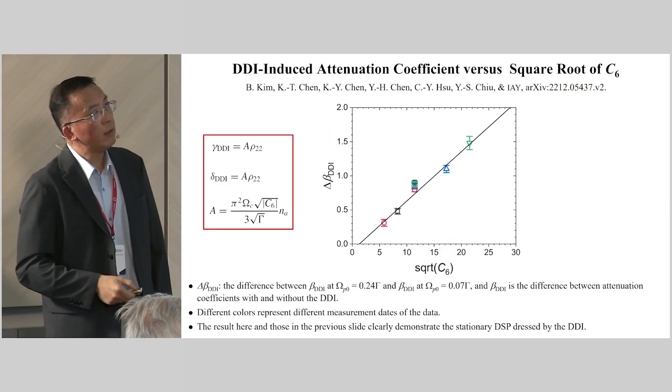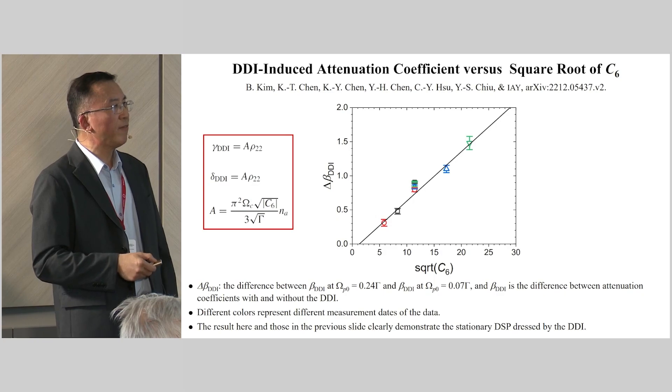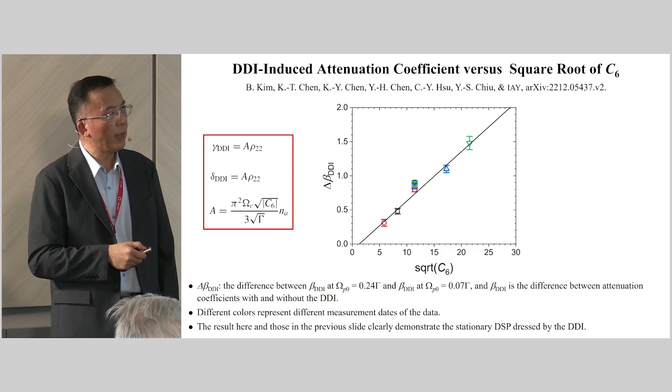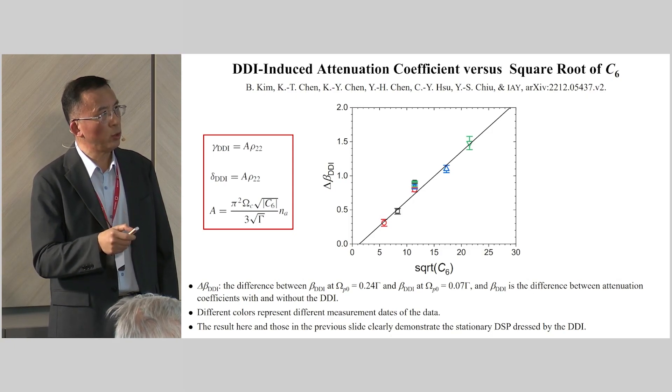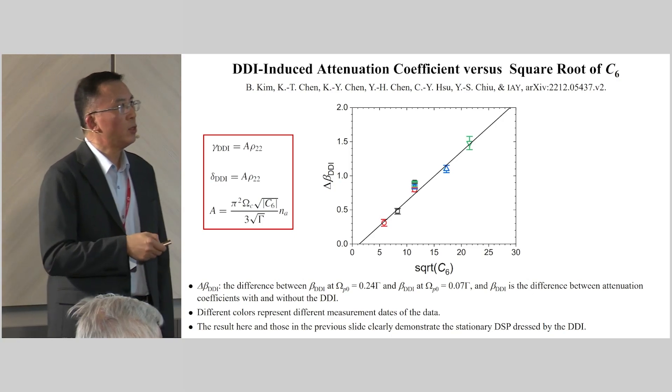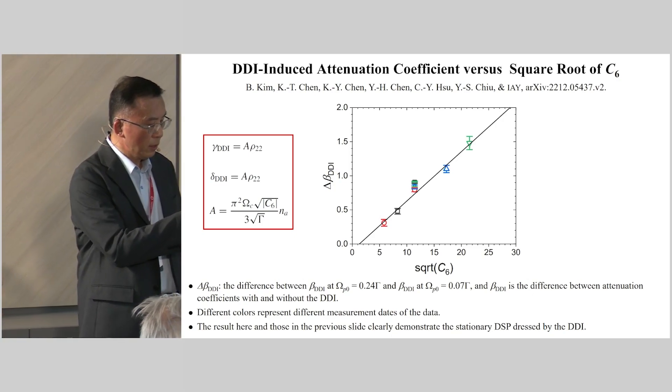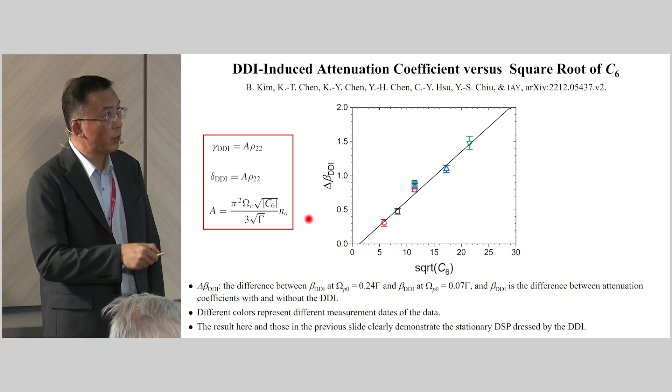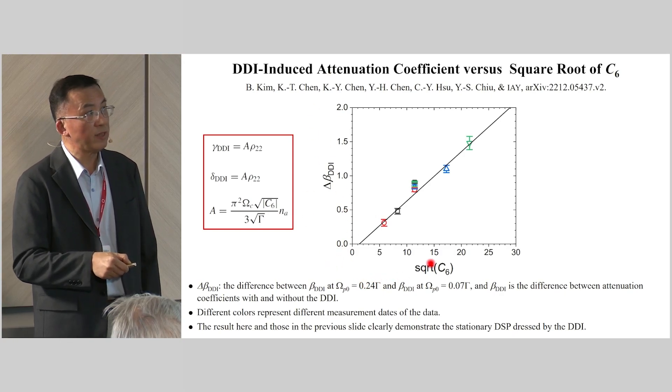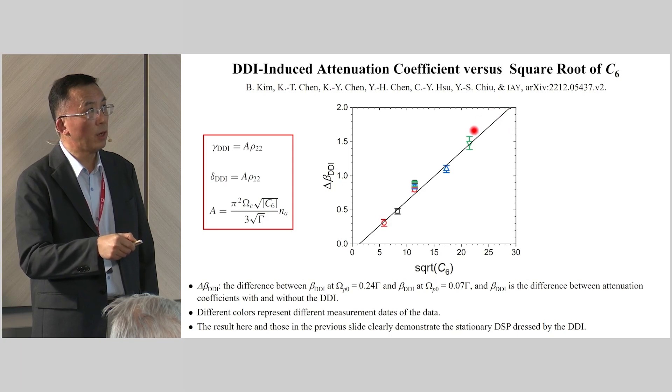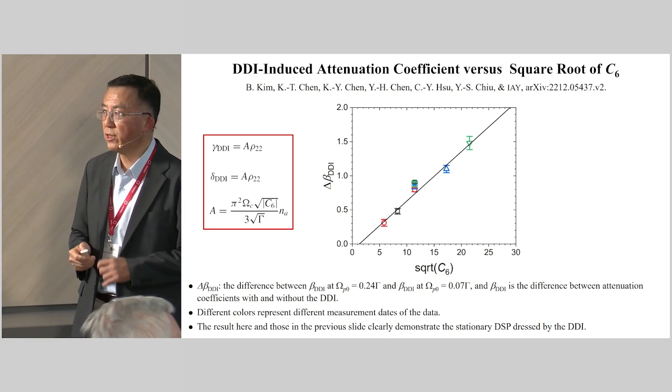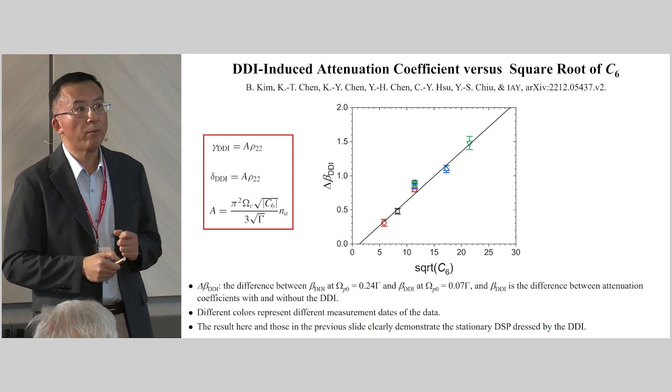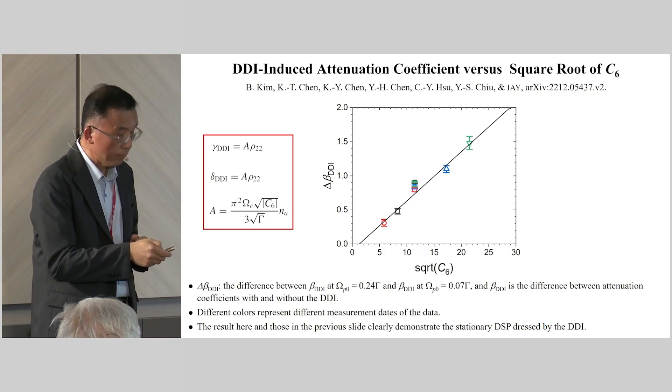We further measure DDI effect at different principal quantum numbers: 28, 30, 32, 35, and 38. We plot this DDI-induced decoherence rate. The dipole-dipole interaction in the near zero Zeeman field, where the dipole-dipole interaction is isotropic, is a function of square root C_6, and they form a straight line as expected. This is another evidence of stationary dark state polariton carrying a DDI interaction.